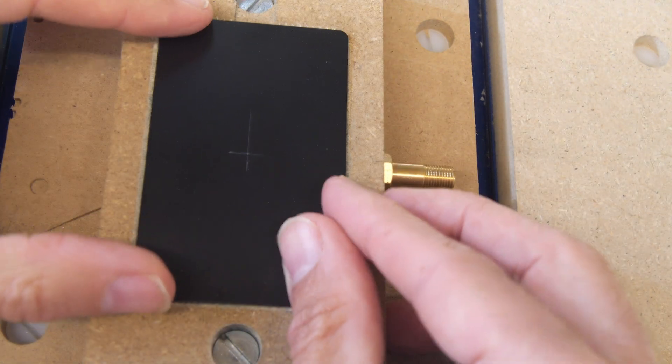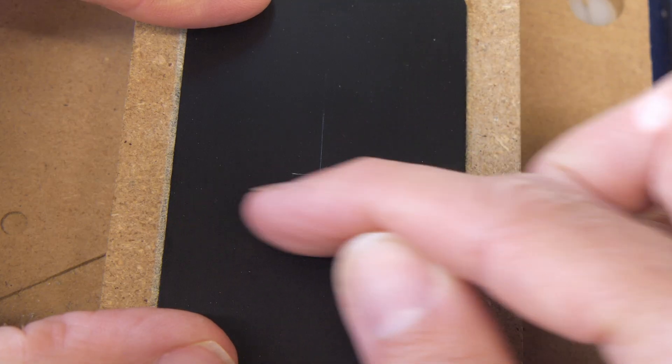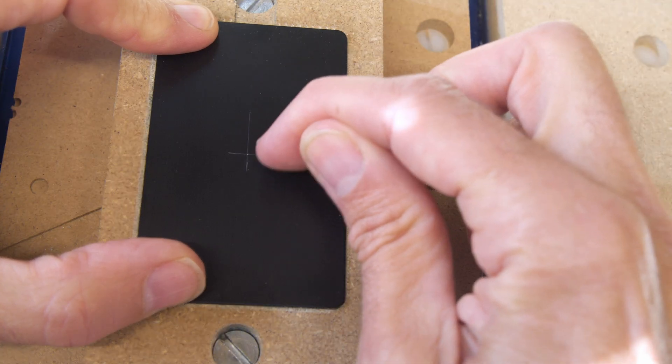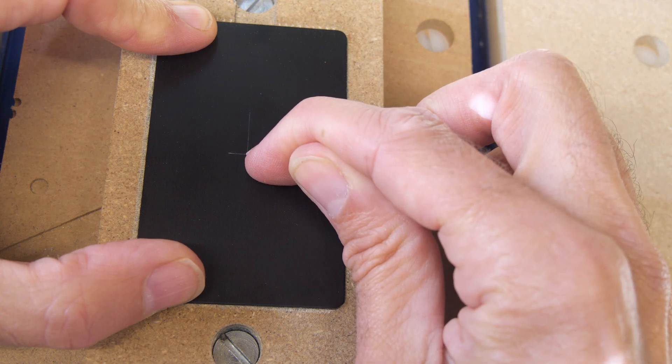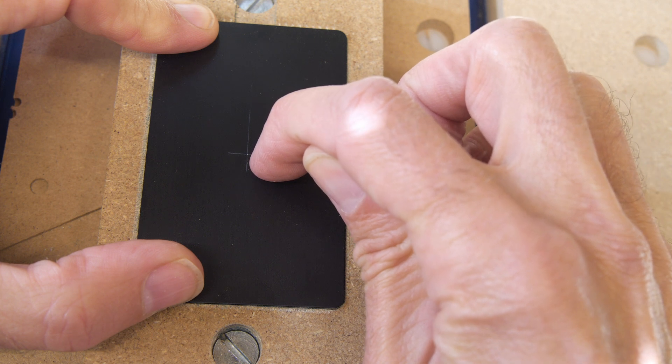Then to get it centered, I took a card blank, and I carefully scratched a little cross in the very center using a pair of calipers, and then I moved the gantry of the CNC to that spot to zero out X and Y. I zero out the Z axis when the bit just touches the card.